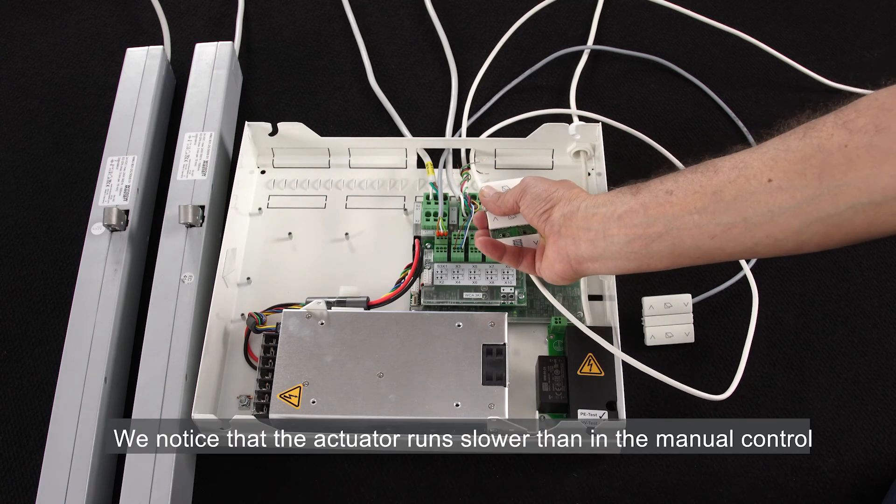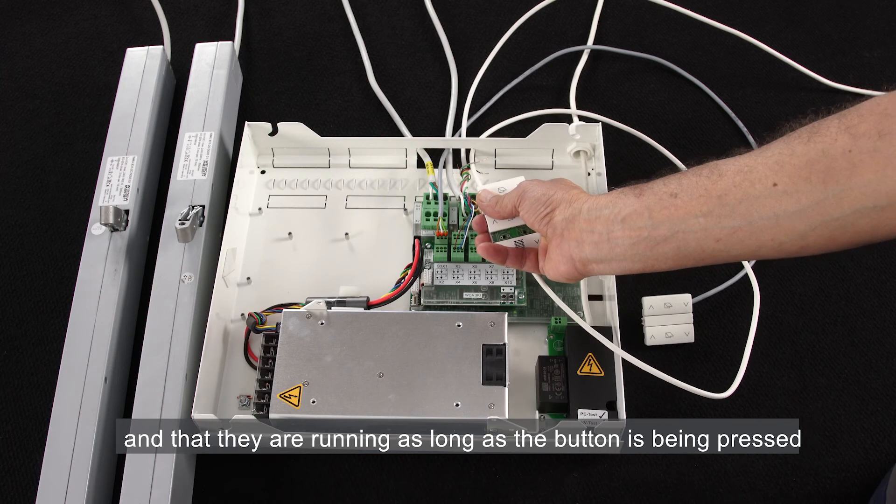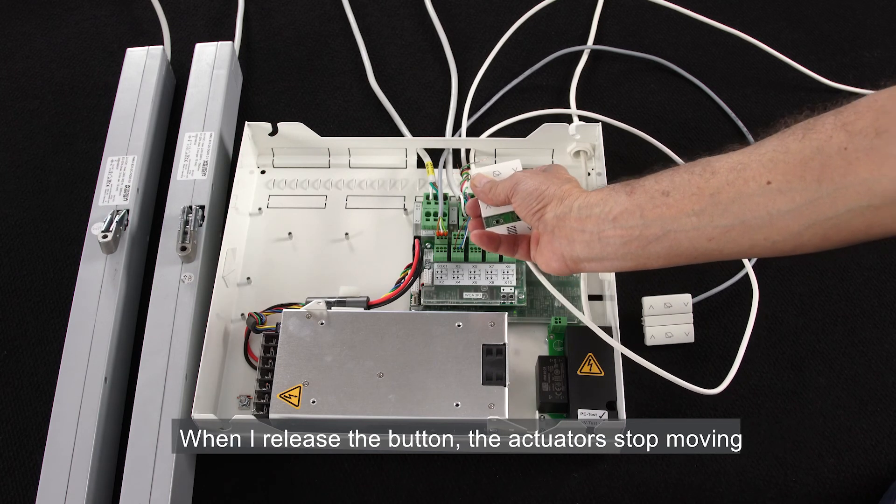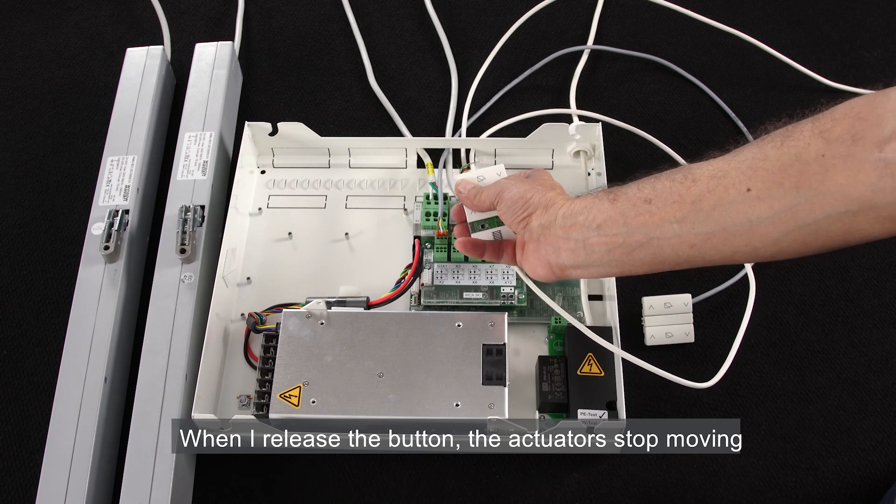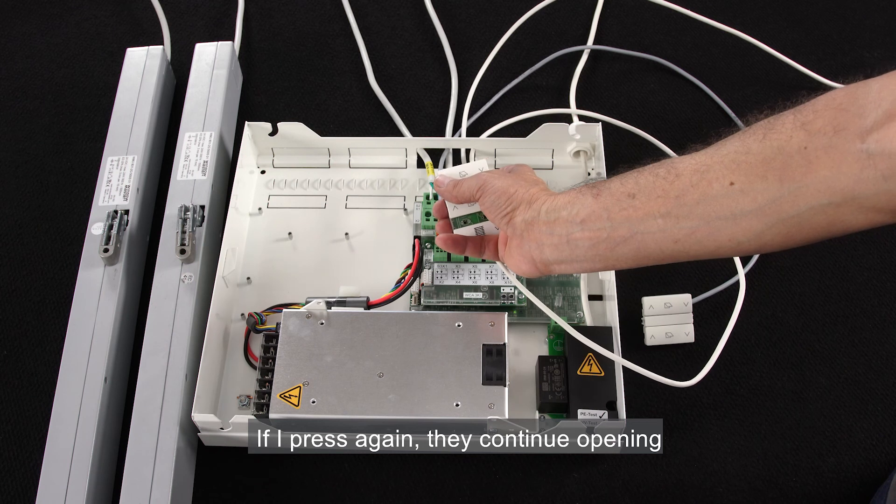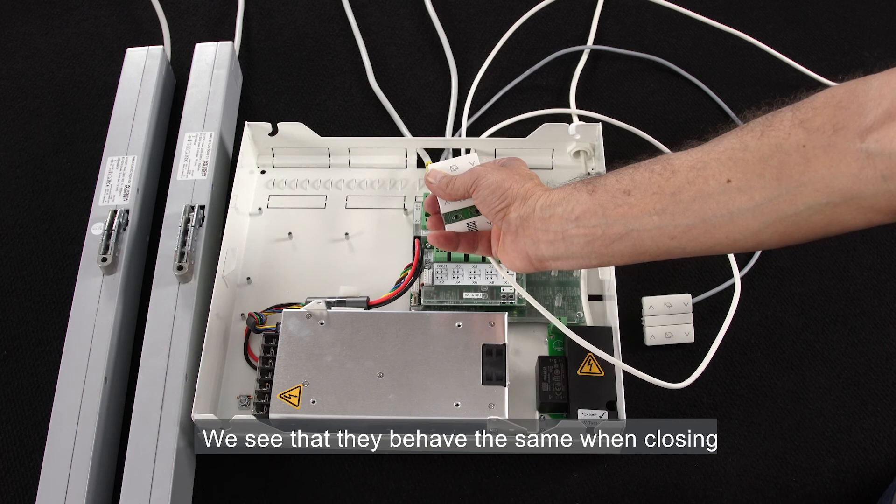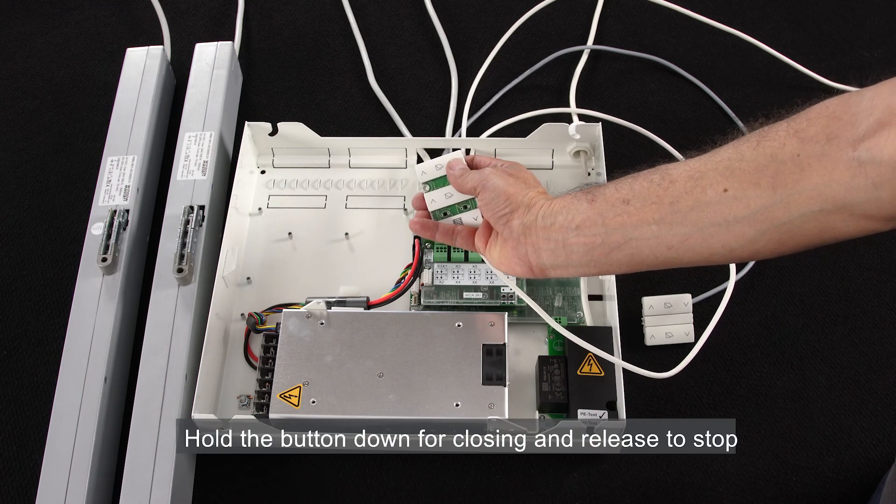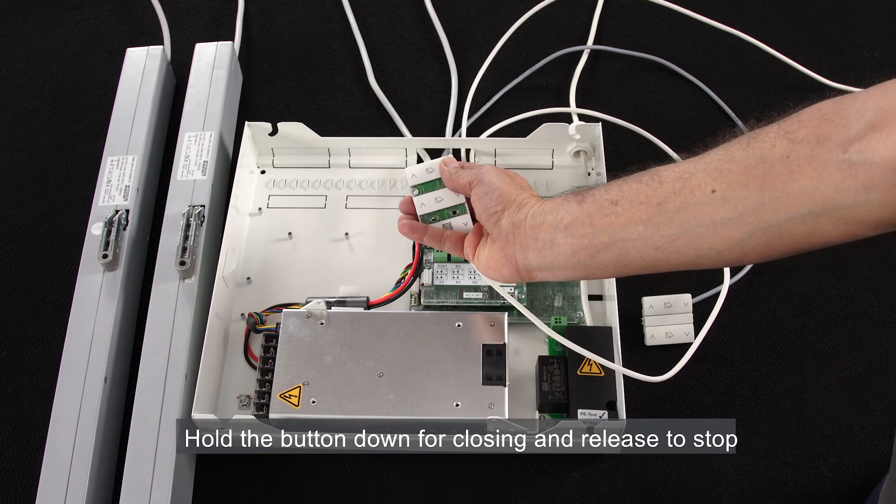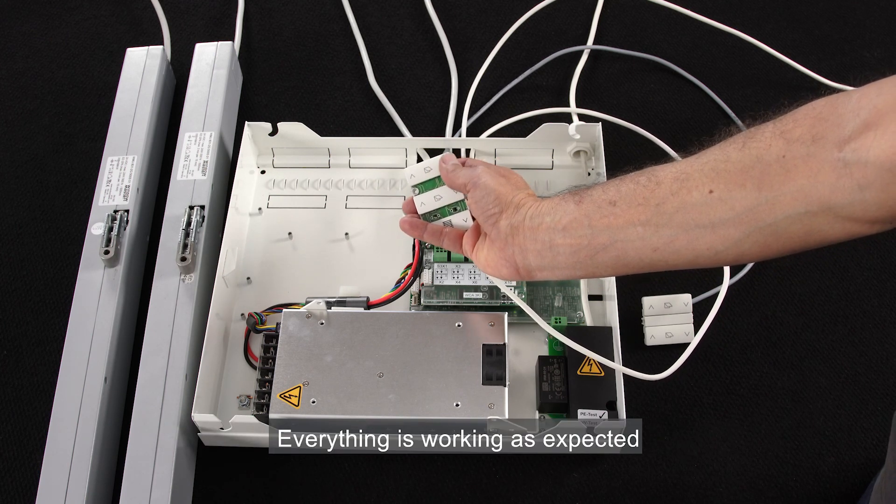We notice that the actuator runs slower than in the manual control and that they are running as long as the button is being pressed. When I release the button, the actuators stop moving. If I press again, they continue opening. We see that they behave the same when closing. Hold the button down for closing and release to stop. Everything is working as expected. The control panel is ready for use.